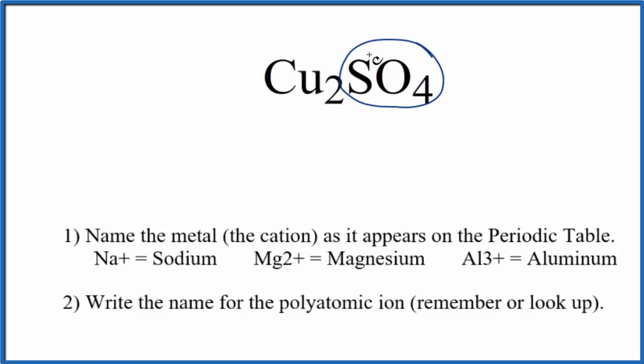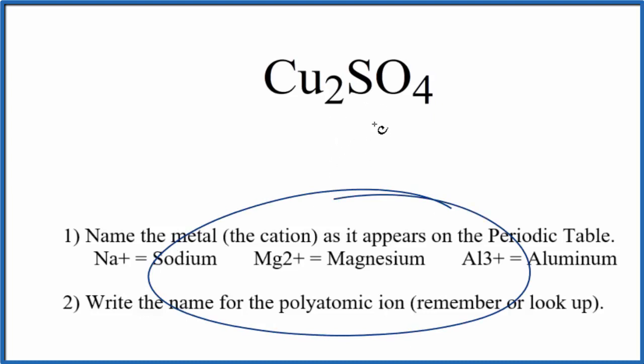So we have the sulfate ion and it's bonded to two copper atoms. Copper is a transition metal, so we have the metal and this group of nonmetals. This is an ionic compound and we can use these rules to name Cu2SO4.